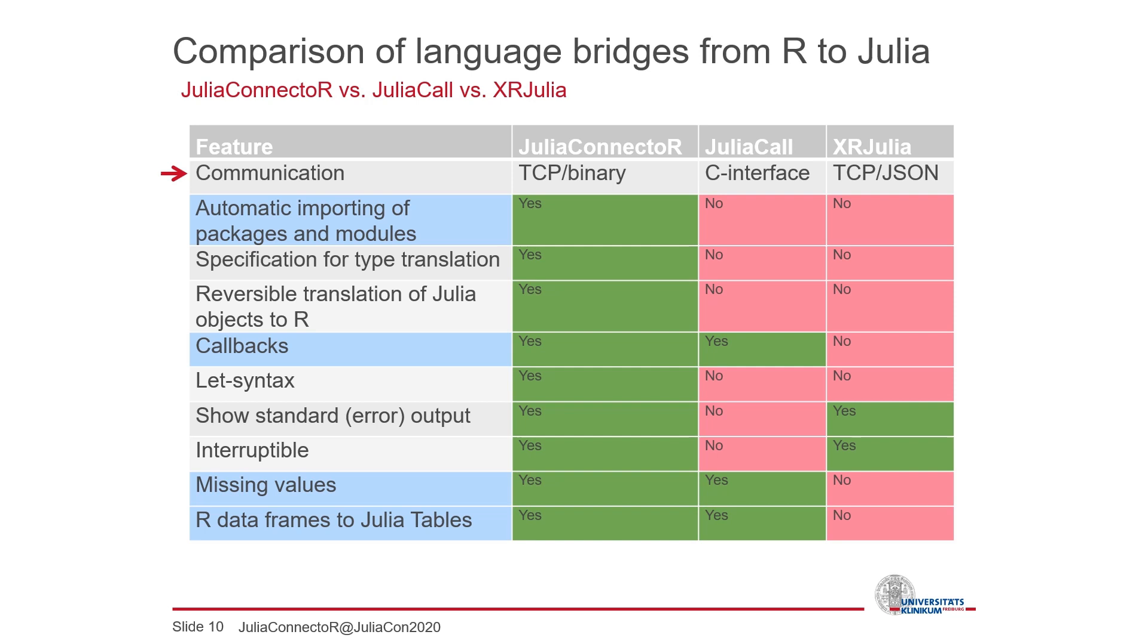For the communication between Julia and R, we chose to use a custom TCP protocol. A connection via TCP can be maintained more easily across different versions of R and Julia than using a connection via the C interface, as JuliaCall does. XRJulia also uses TCP, but uses JSON as interchange format, which is much less efficient because JSON is text-based. Communicating numbers via a text-based format requires the conversions to strings with their decimal representation. Our custom communication protocol uses the binary form of the objects and is optimized to create as little overhead as possible.